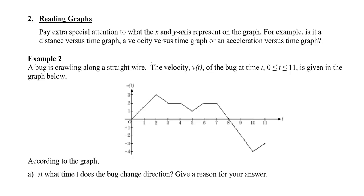Now, in this example here, we have a bug and it's crawling along a straight wire. The velocity, v(t), of the bug at time t from 0 to 11 is given by this graph.